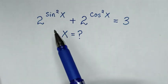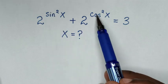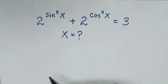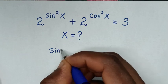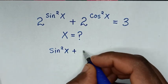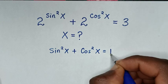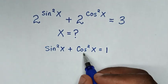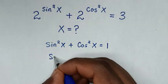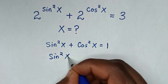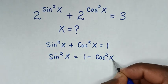In the first step we make the powers of sin and cos into one term. We'll apply the trigonometry rule: sin²x + cos²x = 1. Then we take cos²x to the other side, so sin²x = 1 - cos²x.